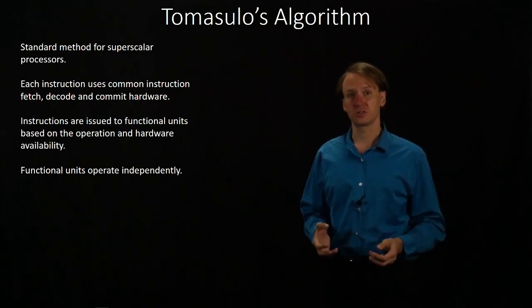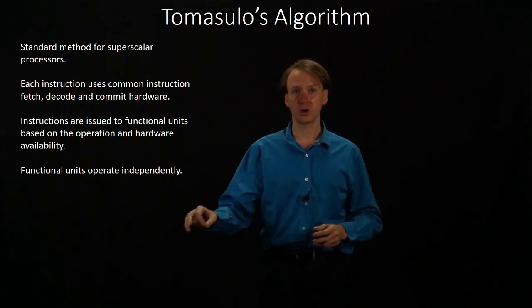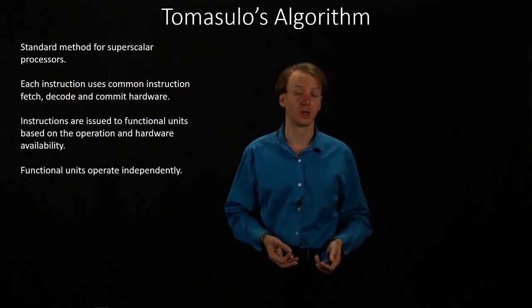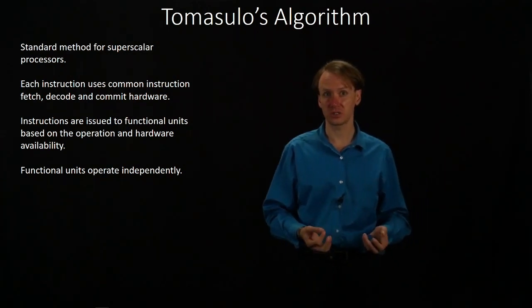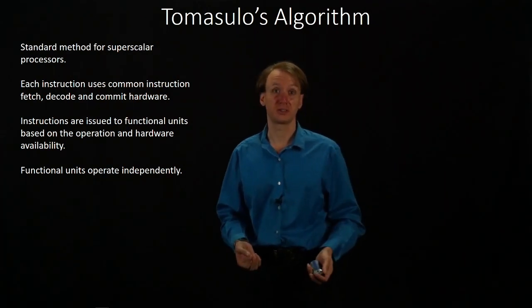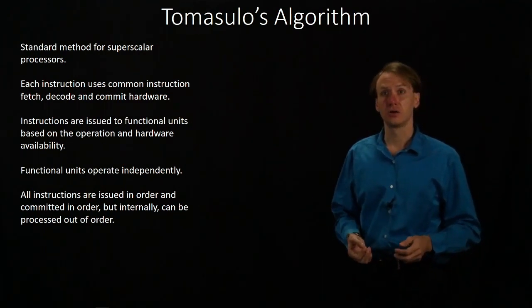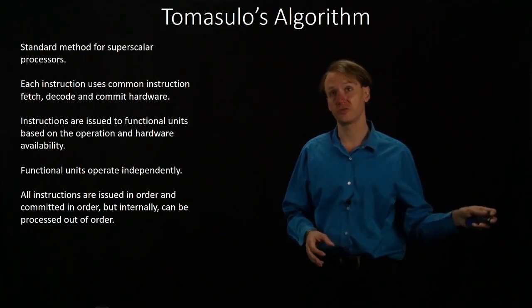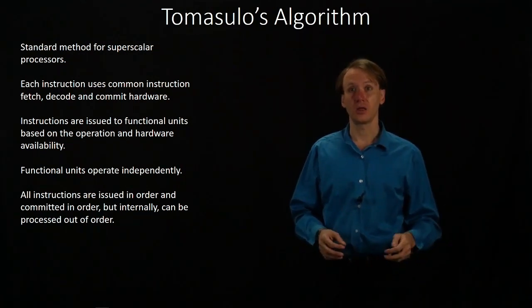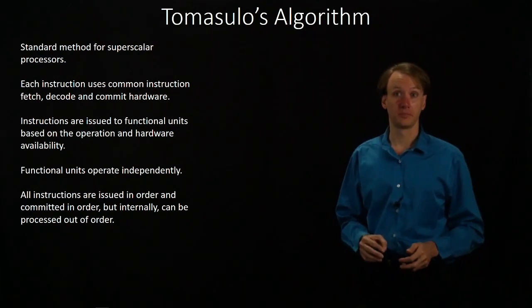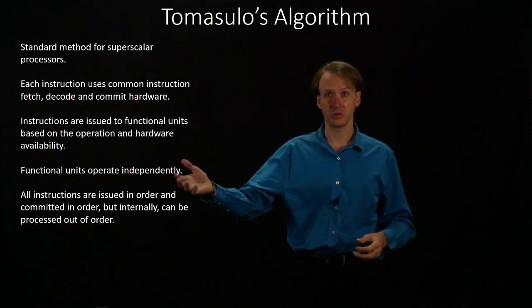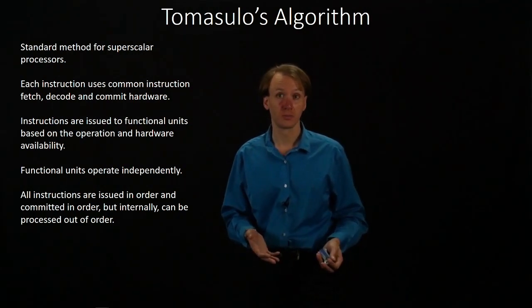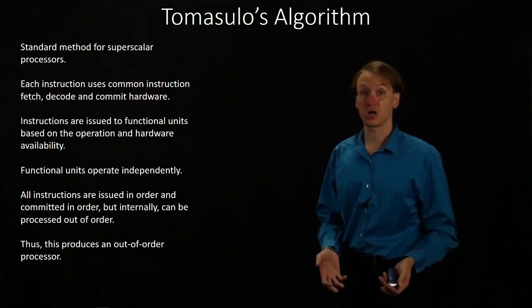All of these functional units operate independently. Each one of them can be processing a separate instruction at the same time. So you can actually be processing as many instructions in one cycle as you have functional units. All of our instructions are going to be issued in order and committed in order, but since the functional units operate independently, we'll be able to process those instructions out of order — which means this will be an out-of-order processor.